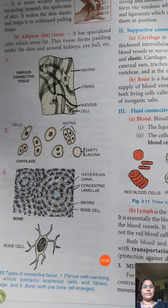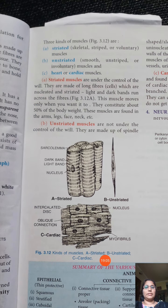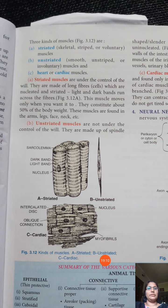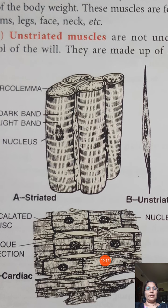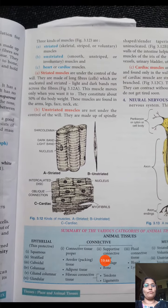The next tissue is muscle tissue. There are three kinds of muscles: striated, unstriated, and cardiac muscle. Striated muscles are voluntary muscles — we can move them according to our will. They are attached to our skeleton and have stripes on them, so they are called striated or voluntary muscles.